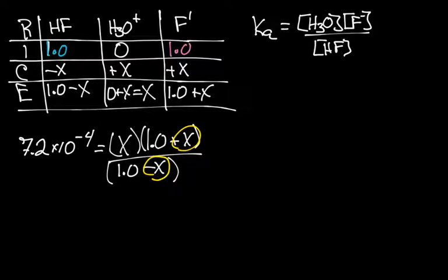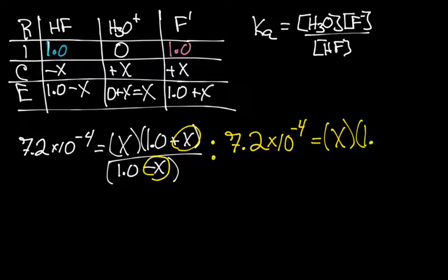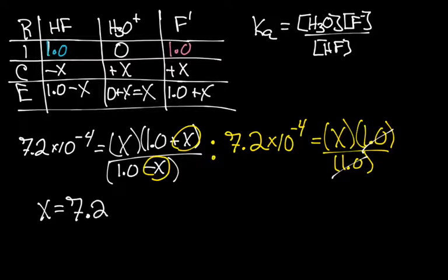So that means we'll end up with 7.2 x 10^-4 equals x times 1.0 divided by 1.0. And in this case, one divided by one is one. So that means that our x equals 7.2 x 10^-4.